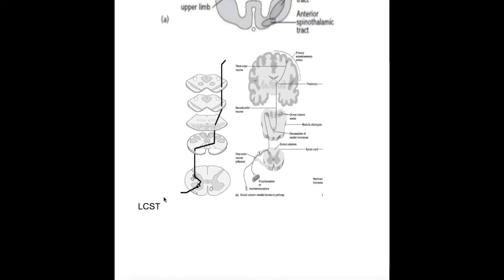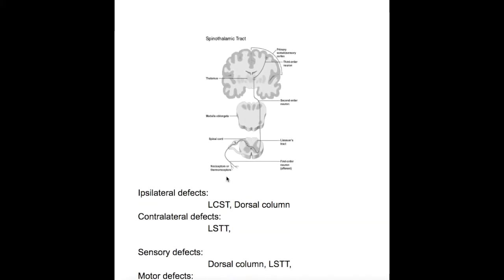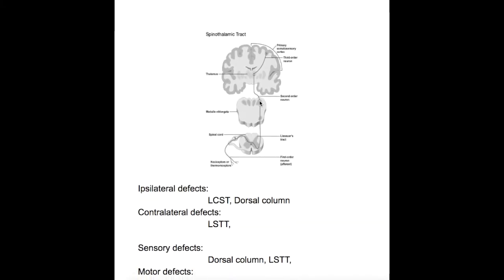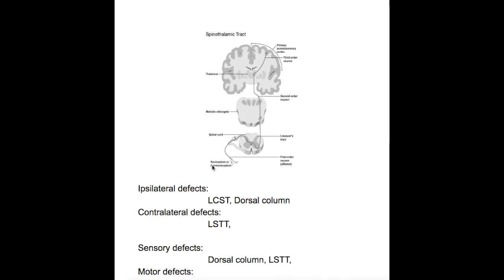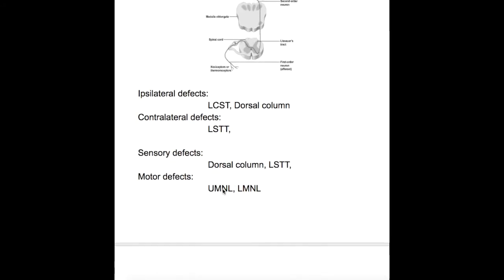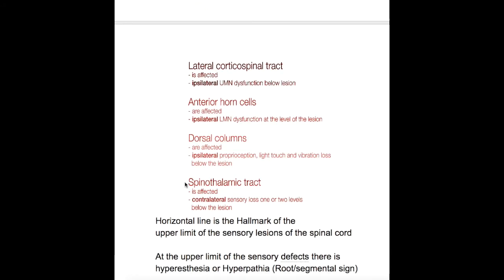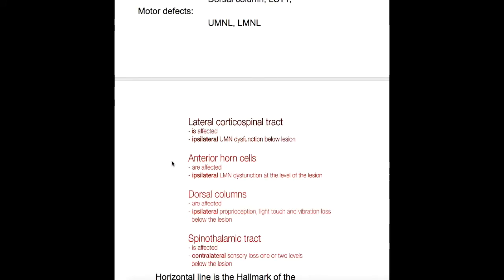Both the dorsal column (ascending) and the lateral corticospinal tract (descending) decussate in the medulla. In contrast, the lateral spinothalamic tract crosses over in the spinal cord one or two levels above the lesion and runs contralaterally. So a defect in the lateral spinothalamic tract produces a defect on the opposite side of the body, while defects in the lateral corticospinal tract and dorsal column produce defects on the same side. There is also involvement of the anterior horn on the same side.